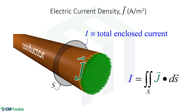There's a J term in Maxwell's equations — the electric current density. If electricity flows down a wire, the total flow is called current I. But the flow of charges is distributed throughout the entire conductor, so it makes sense to talk about a distributed current — the current density J — with units of amps per meter squared. If we add all of this up we get the total current.